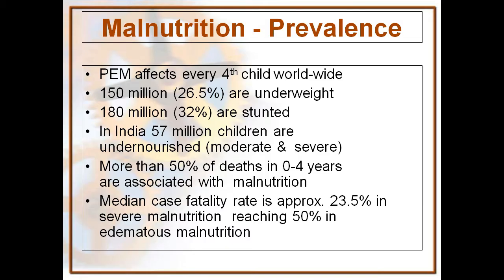What is the prevalence of malnutrition? Protein energy malnutrition affects every fourth child worldwide — it is very common. 150 million are underweight and 180 million are stunted. In India, 57 million children are undernourished, moderate and severe. More than 50 percent of deaths in 0 to 4 years are associated with malnutrition. The median case fatality rate is approximately 23.5 percent in severe malnutrition, reaching 50 percent in edematous malnutrition.